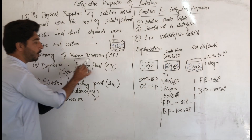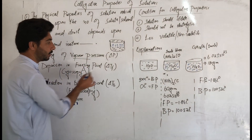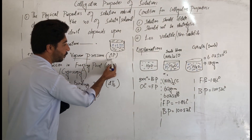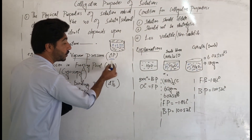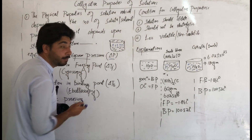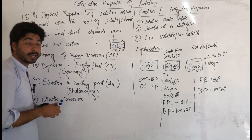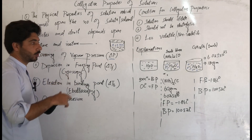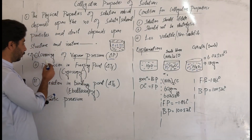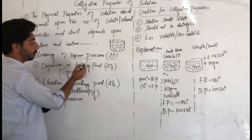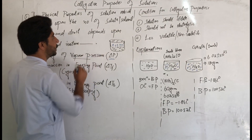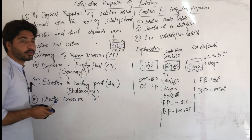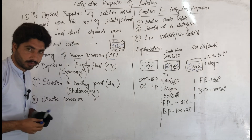The change in vapor pressure is denoted as delta P. This lowering of vapor pressure — delta P — is an example of a colligative property of a solution.